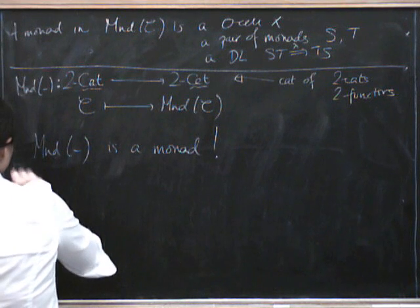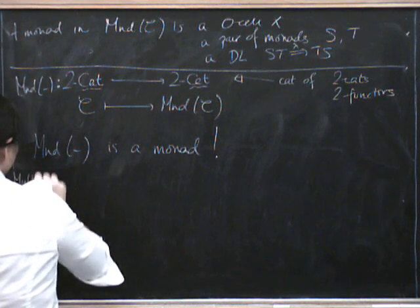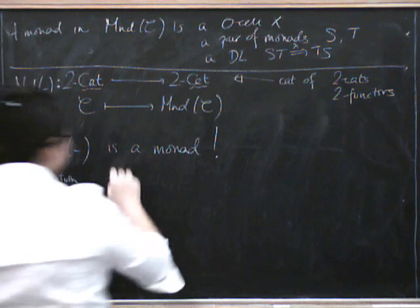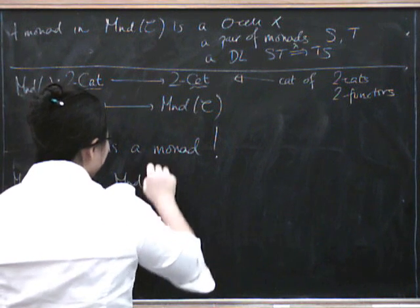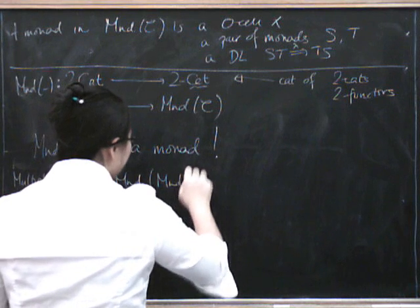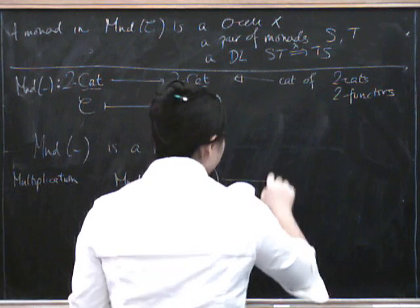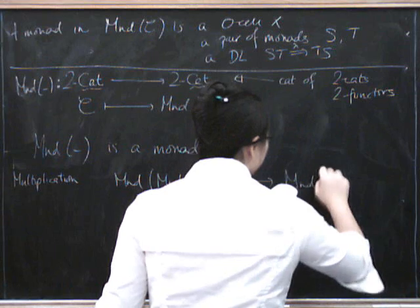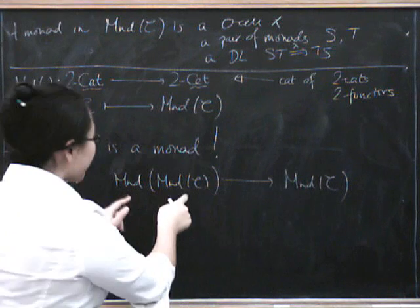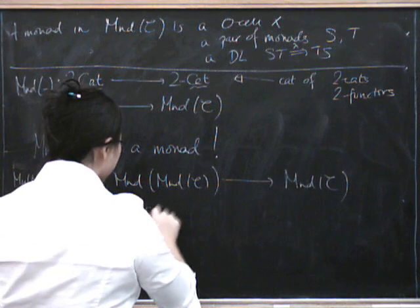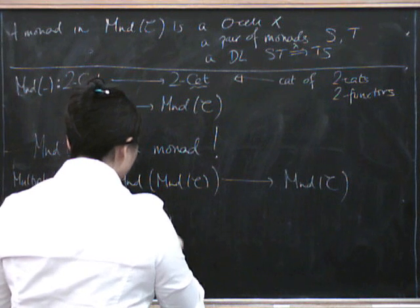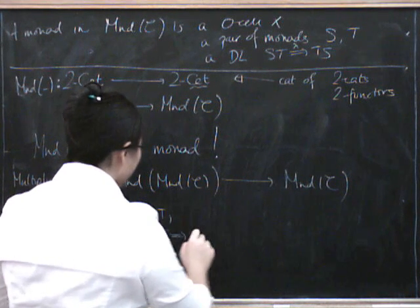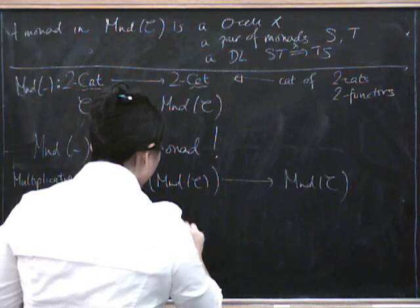The multiplication, that is the mu. So, we need something from monad in monad in C. And this has to go to monad in C. So, what's this? This is an X, an S, a T, and a distributive law of S over T. So, an object in here is a distributive law, basically.